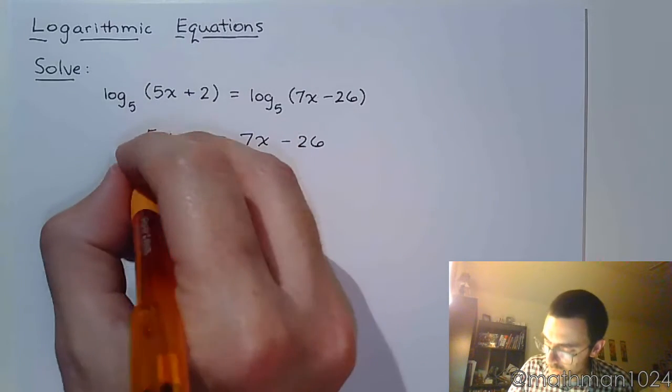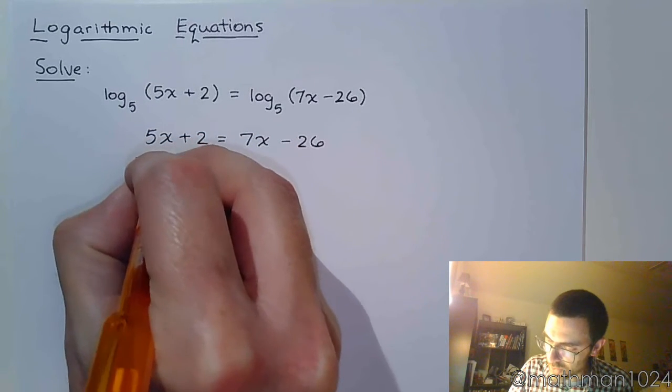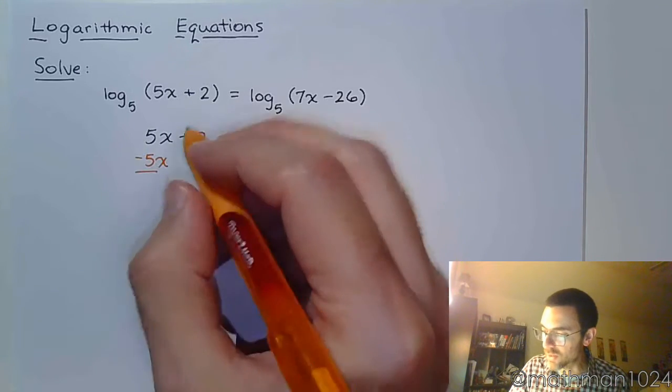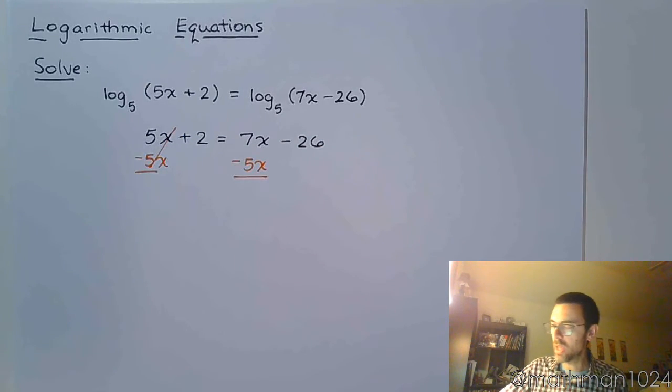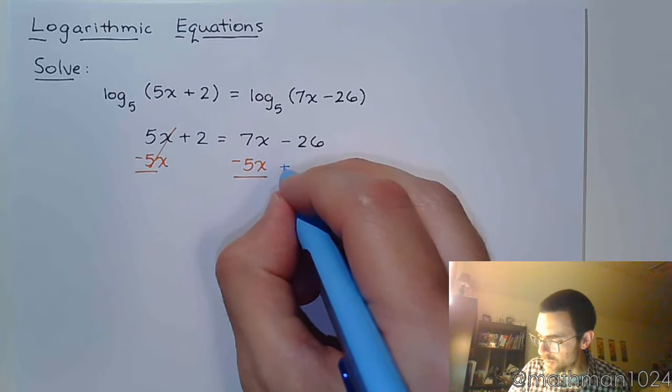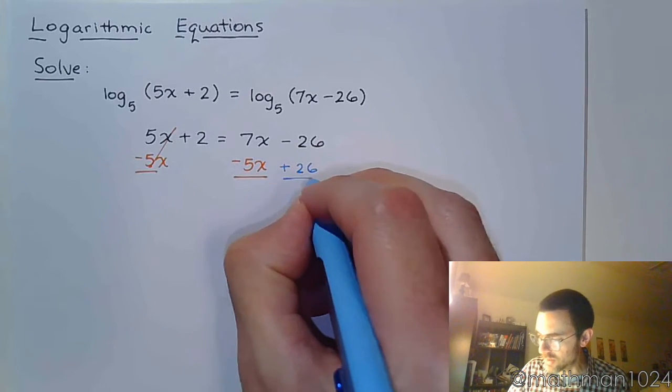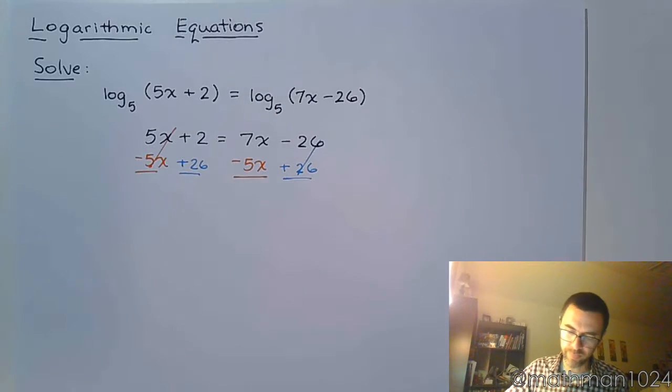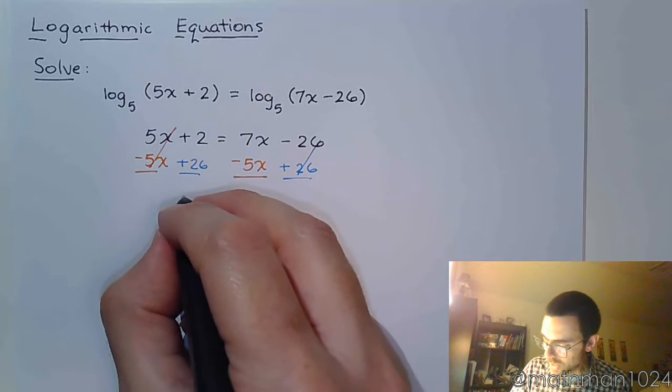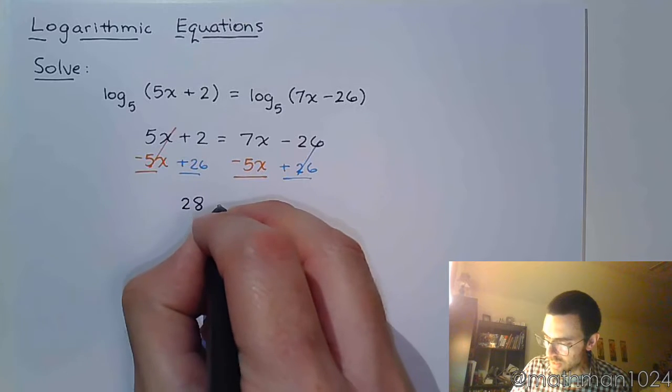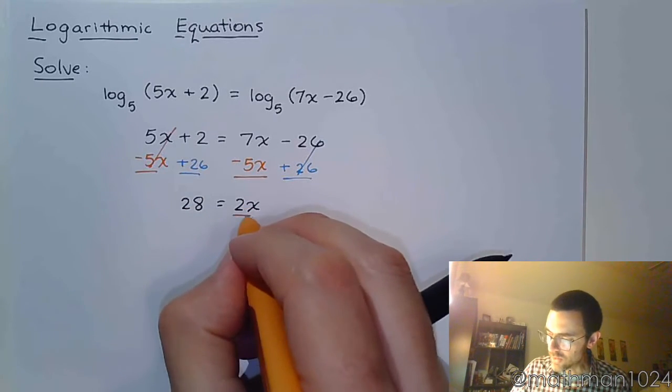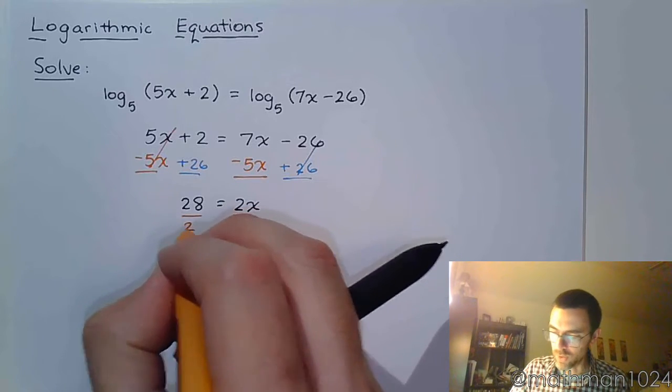And then we solve this. We can go ahead and subtract 5x on both sides. This is a nice linear equation. Probably forgot how nice things could be, right? And we might as well go ahead and add the 26 to the other side, like this, plus 26. So we get 28 is equal to 2x, which means that x is just equal to 14.